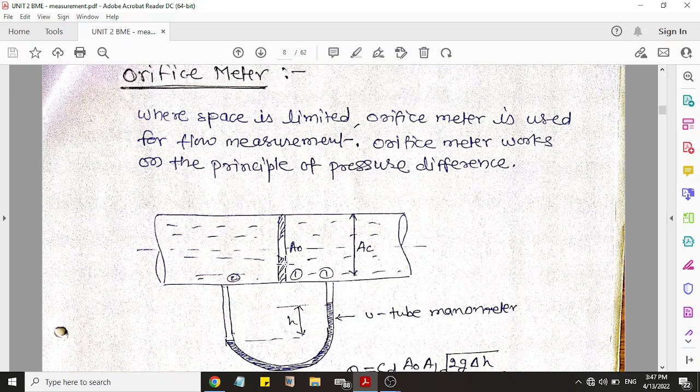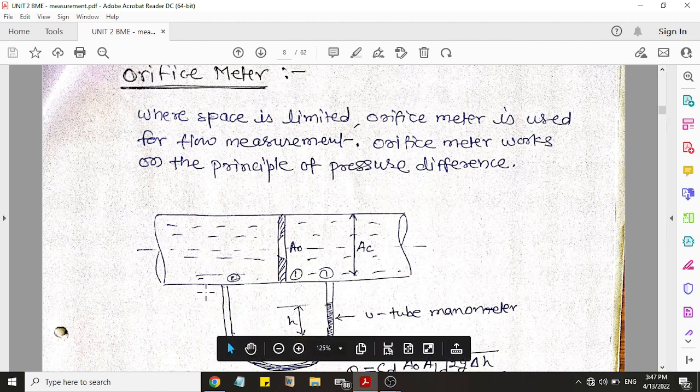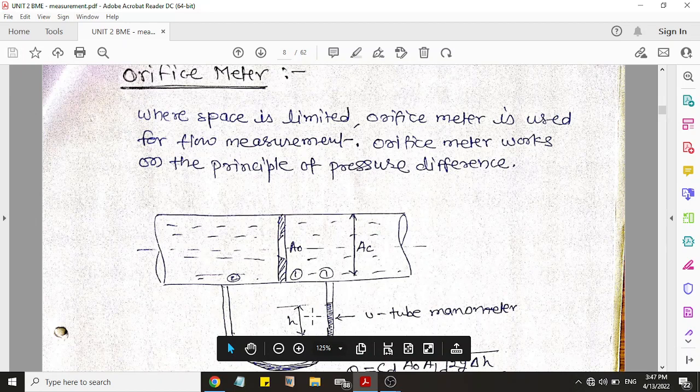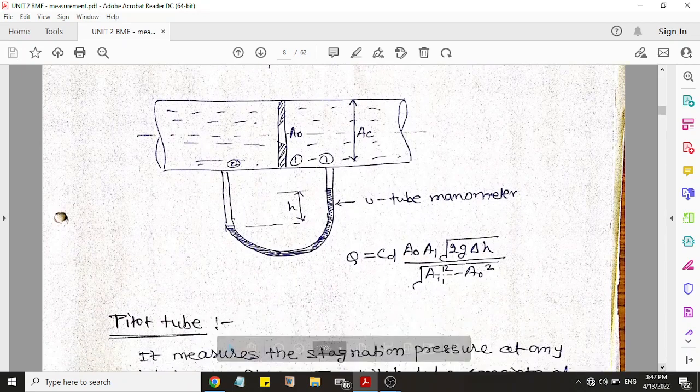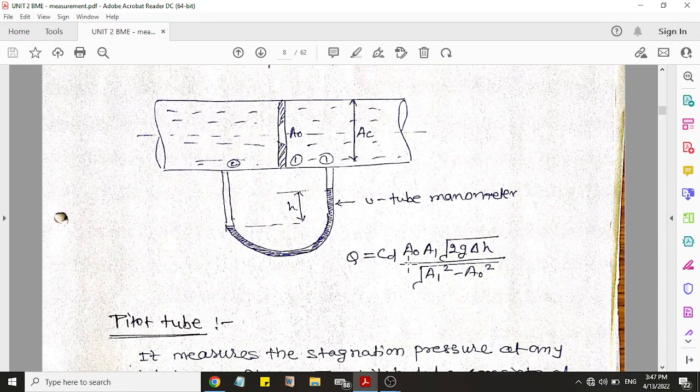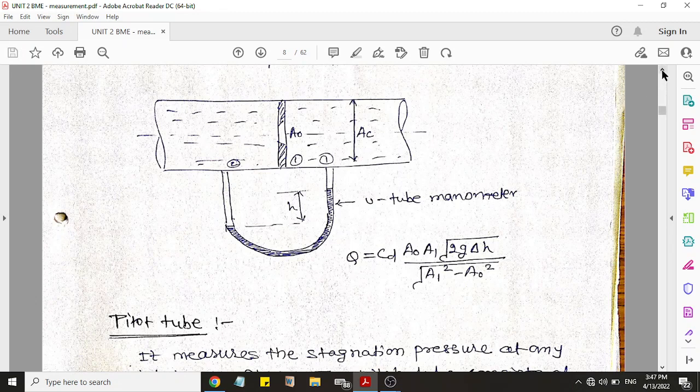You fit this disc inside the pipe, and you can see when flow from left to right, again pressure difference will create and you will get the height of mercury. Again you will put this H in the formula and you will get the discharge. So this is also a very simple method to measure the flow.